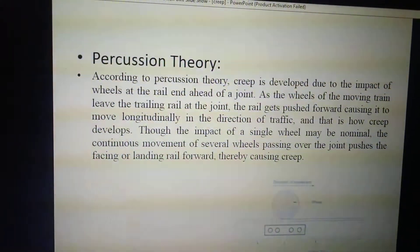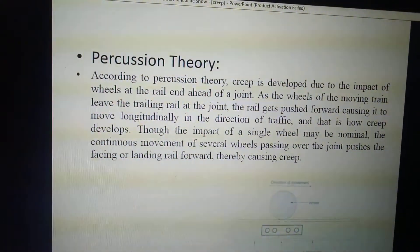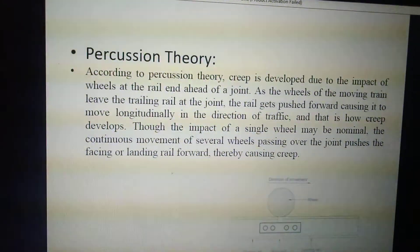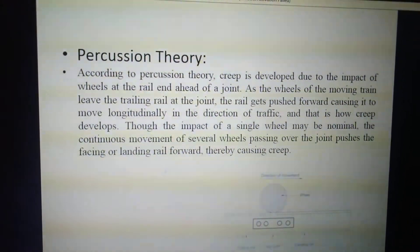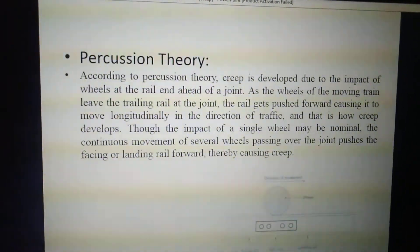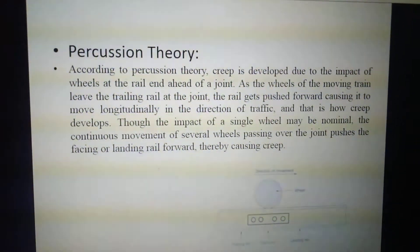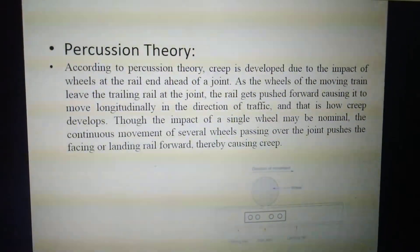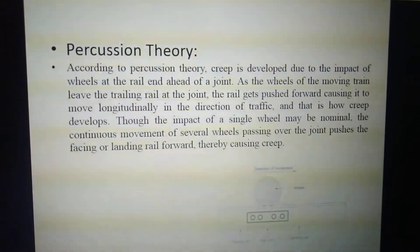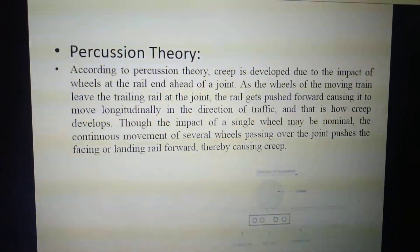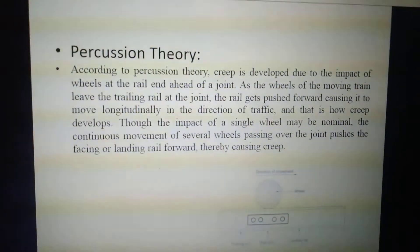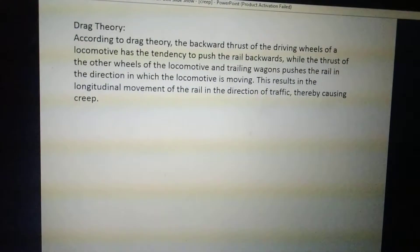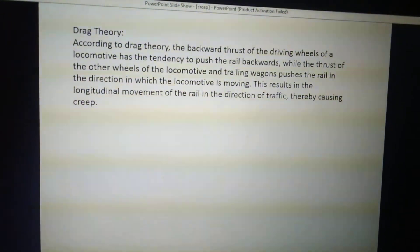The second theory is the percussion theory. This is based on traffic moving on the joint, particularly in the forward direction. According to the percussion theory, creep is developed due to the impact of the wheel at the rail head at a joint. As the wheel of the moving train leaves the trailing rail at the joint, it gets pushed forward, causing it to move longitudinally in the direction of traffic, thereby causing creep.